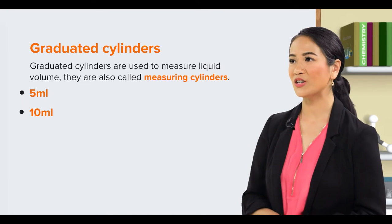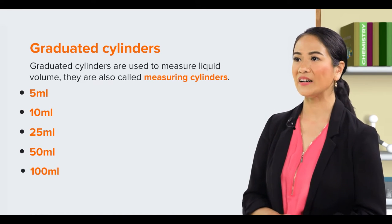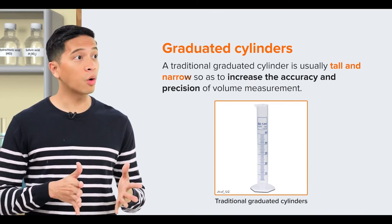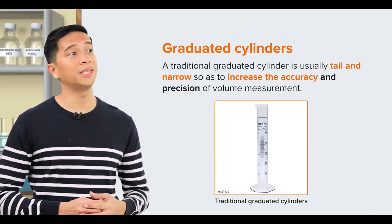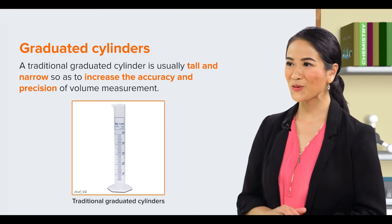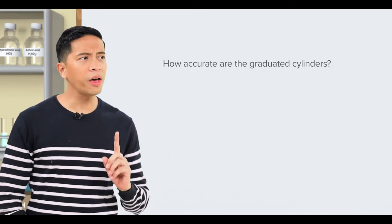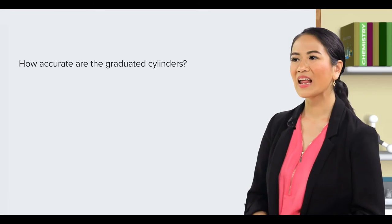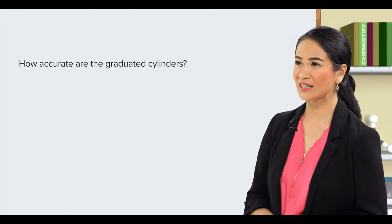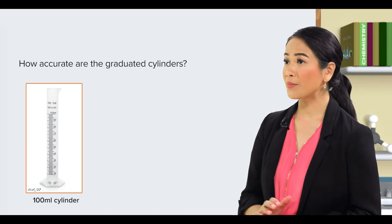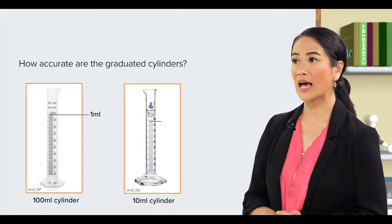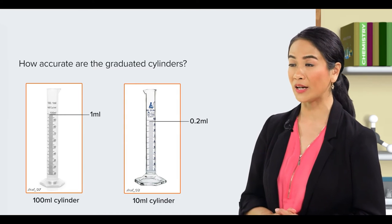That's right. The common sizes are 5, 10, 25, 50, and 100 ml. So, these cylinders are tall and narrow so as to increase the accuracy and precision of volume measurement? That's right. Okay, how accurate are these graduated cylinders? The volume on graduated cylinders is depicted on scales. For example, 100 ml cylinders have 1 ml grading divisions, while 10 ml cylinders have 0.2 ml grading divisions.